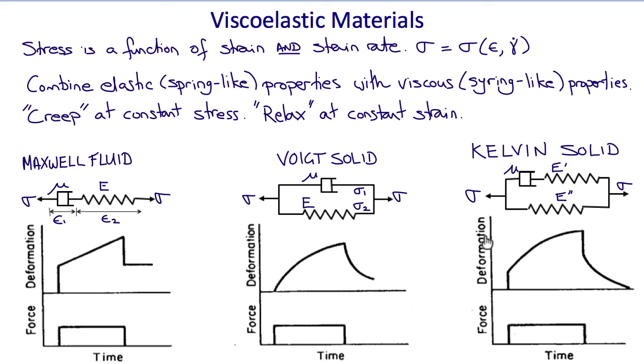A Kelvin solid is similar to the Voigt solid, except it has effectively an additional spring in series, with the result that when the force is applied, it instantaneously stretches, then it continues to creep like a Voigt solid, and then when it's unloaded, it instantaneously recoils somewhat and then creeps back to its original natural state.